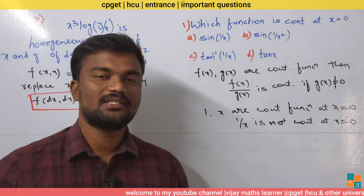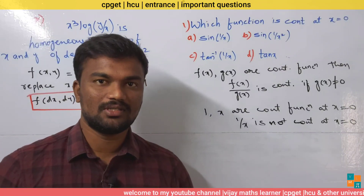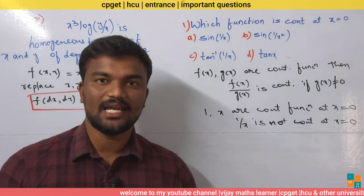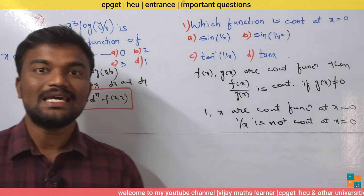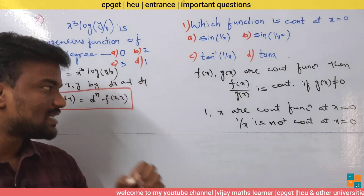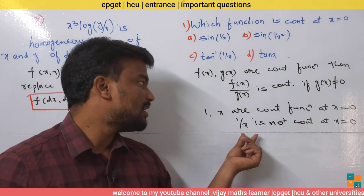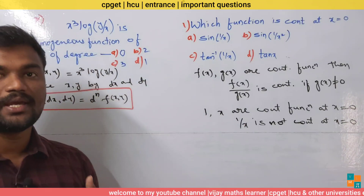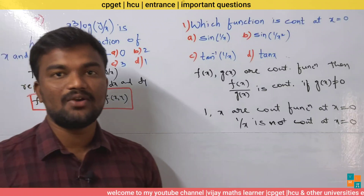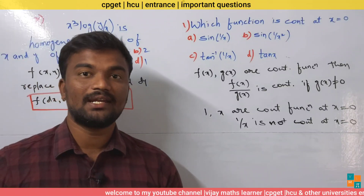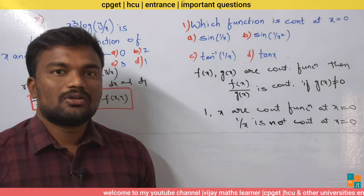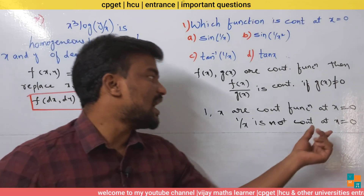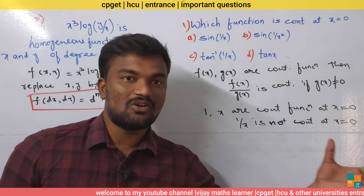However, 1/x is not continuous at x equals 0, because if we substitute x equals 0, we get 1/0, which is undefined — it gives infinity. So the function 1/x is not continuous at x equals 0.